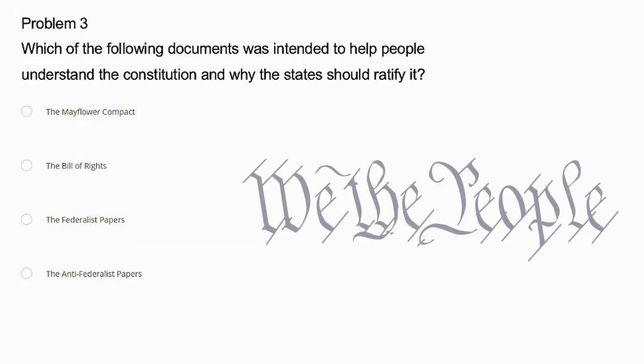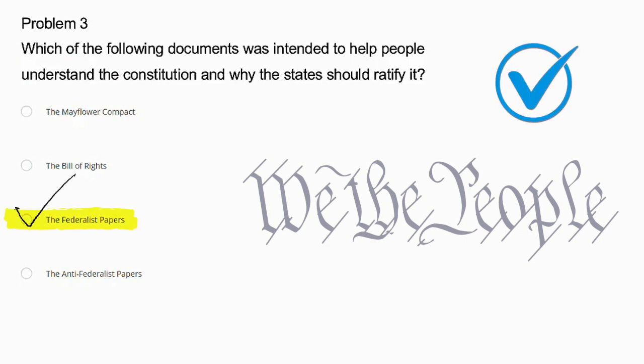Problem number 3. Which of the following documents was intended to help people understand the Constitution and why the states should ratify it? The Mayflower Compact, the Bill of Rights, the Federalist Papers, or the Anti-Federalist Papers? The correct answer is the Federalist Papers. They were written explicitly to explain the Constitution, highlight its benefits, and convince states to ratify it. The other documents are not correct because the Mayflower Compact was an early colonial agreement, the Bill of Rights added amendments to the Constitution, and the Anti-Federalist Papers argued against ratifying the Constitution.